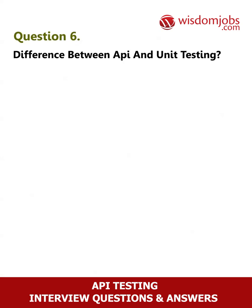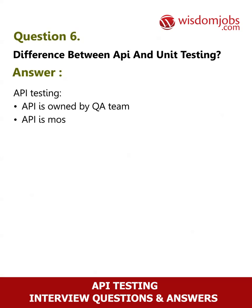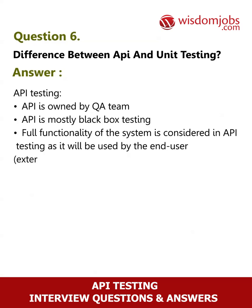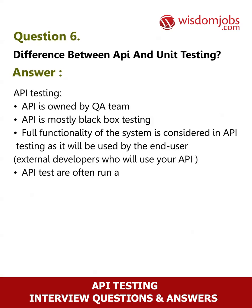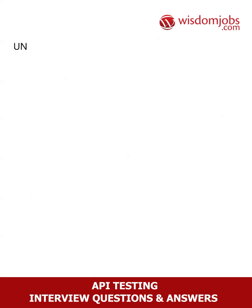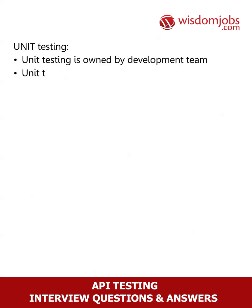Question 6: Difference between API and unit testing. Answer — API testing: API is owned by the QA team. API is mostly black box testing. Full functionality of the system is considered in API testing, as it will be used by the end user and external developers who will use your API. API tests are often run after the build is ready and authors do not have access to the source code.